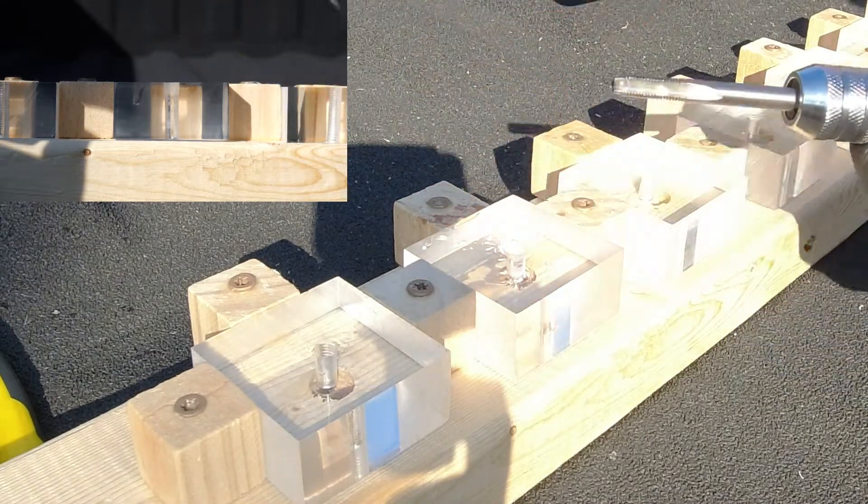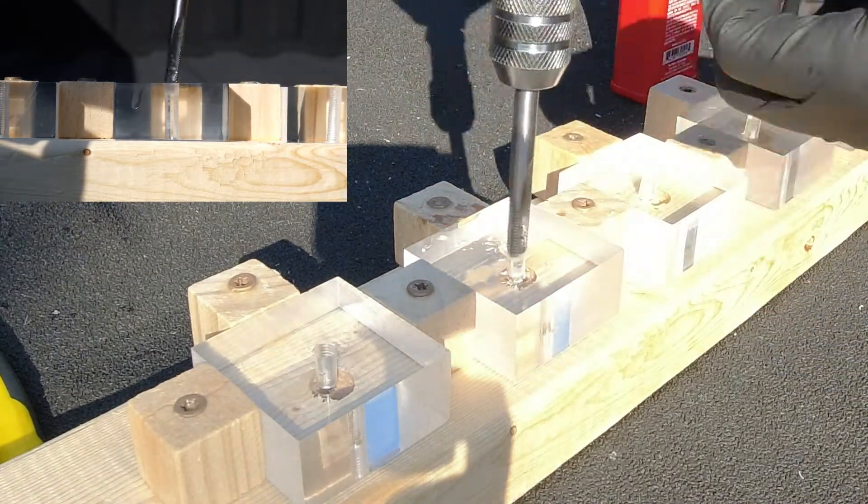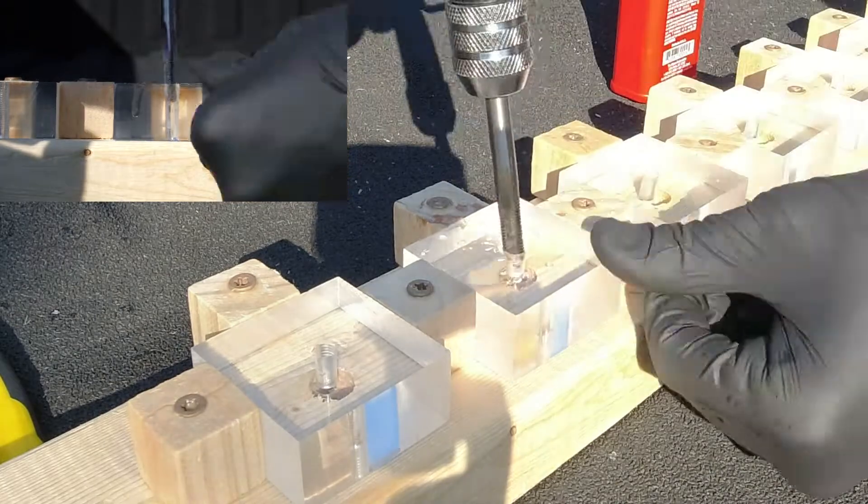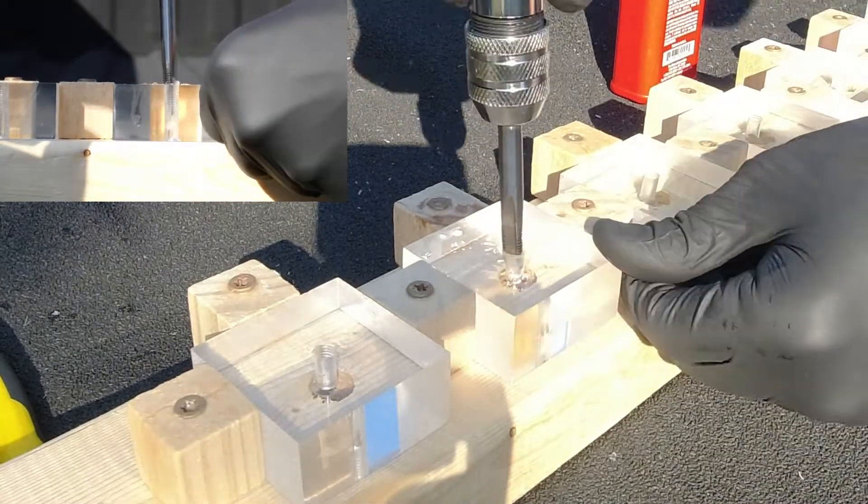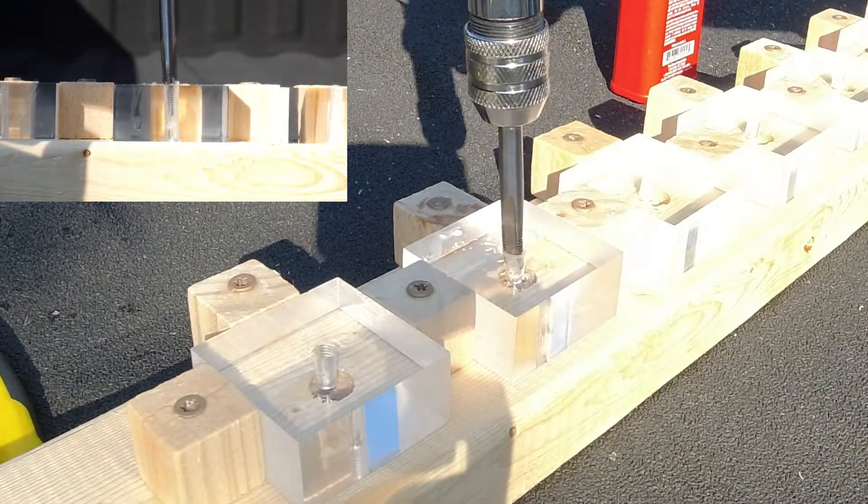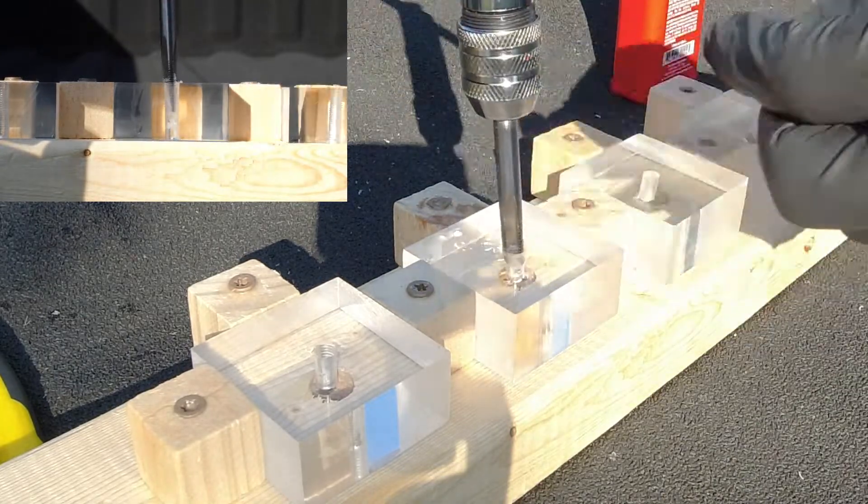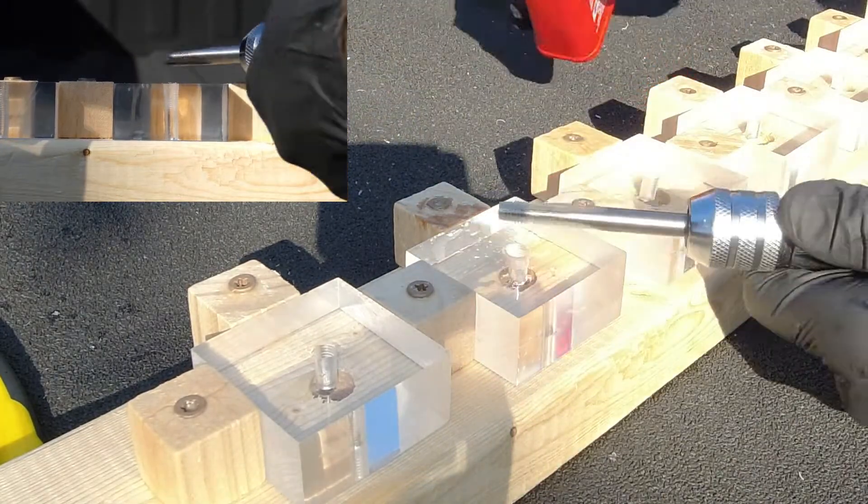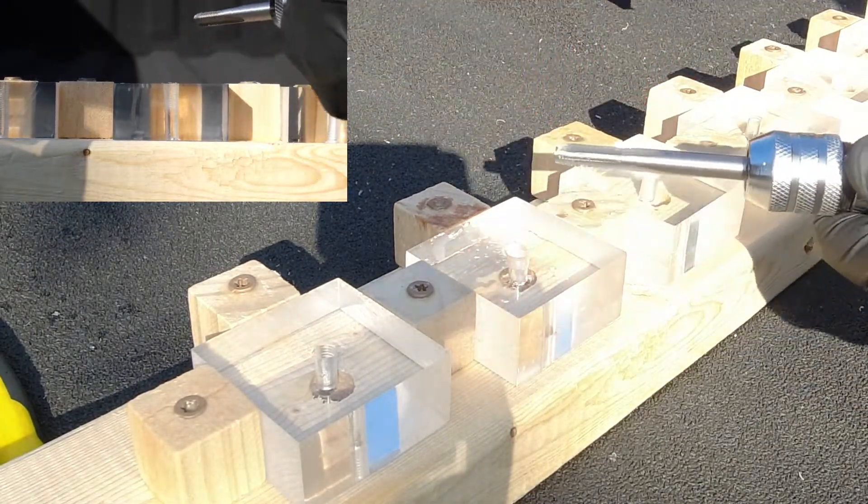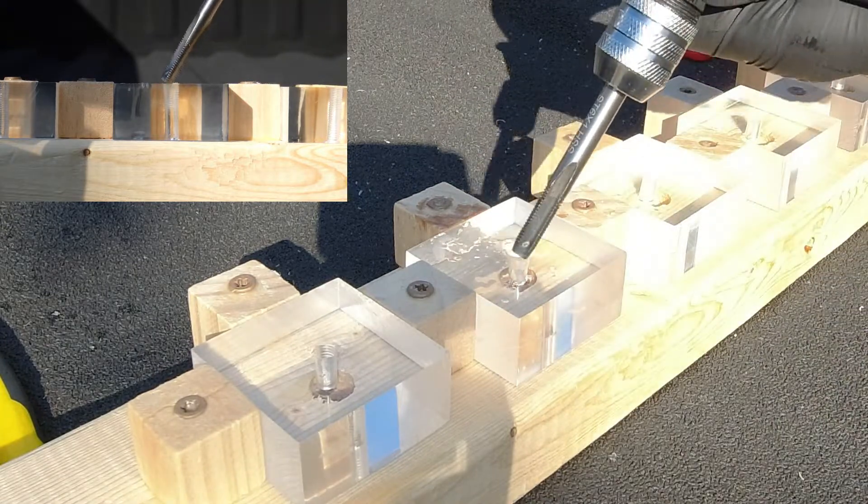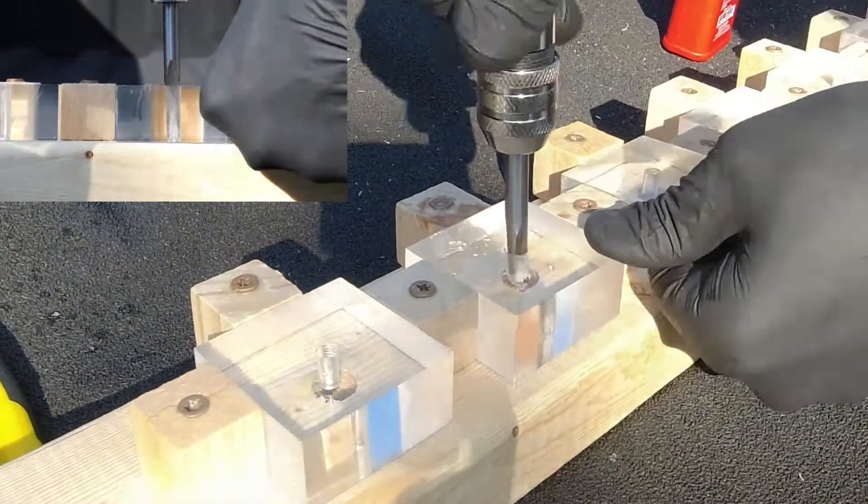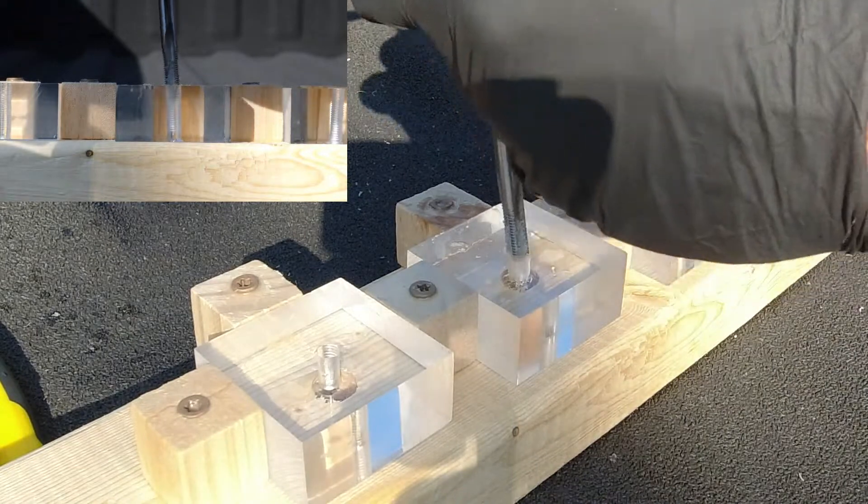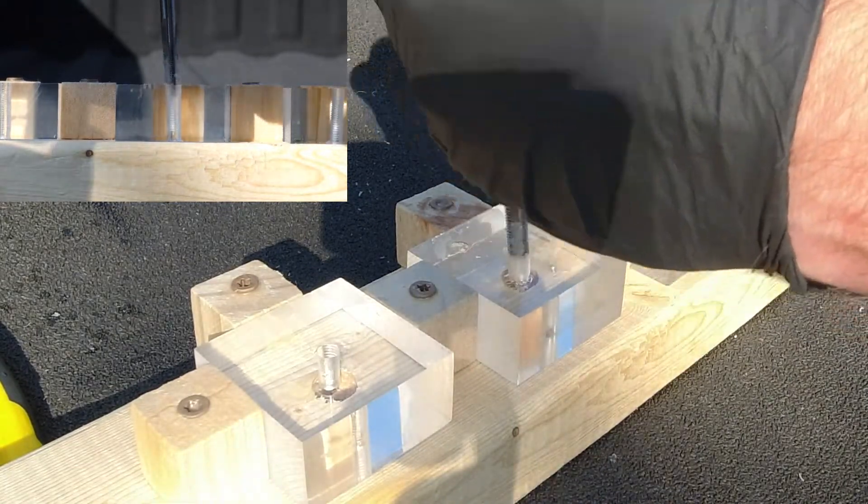Anytime you feel resistance, always back out because you can always go back in - you don't want to ever break your tap. Now usually in plastics you don't have to worry about this as much, but if you're doing steel, there's a very good chance you could break your tap. So we're going to add a little more cutting fluid and continue on. We're going to back out, clean out our cutting area, and let's see if we can do one more pass. Tapping a hole is a very long and tedious process.